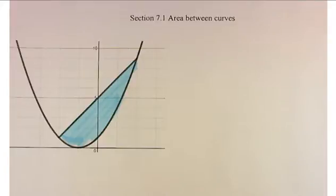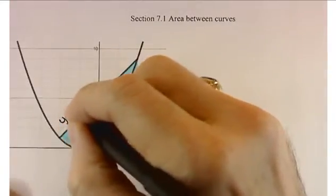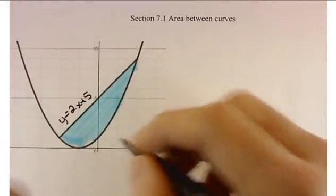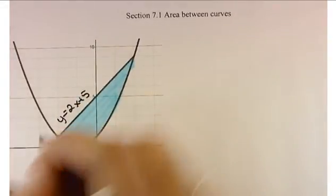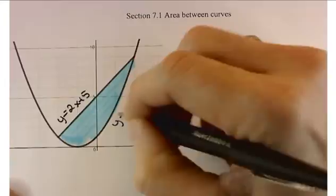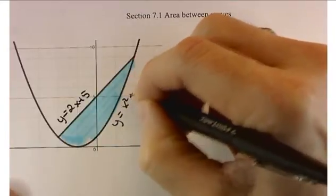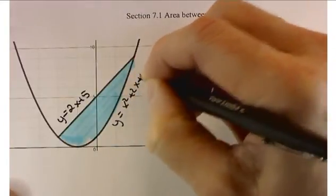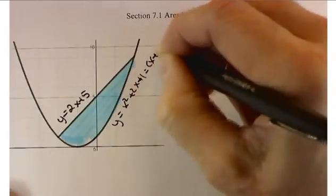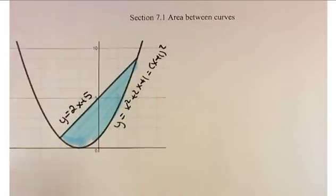This talks about area between two curves. So what I have graphed here is problem number two. We've got a couple functions: y equals 2x plus 5 and y equals x squared plus 2x plus 1. You might notice that that's (x+1) squared. We're trying to find the area between these two curves.